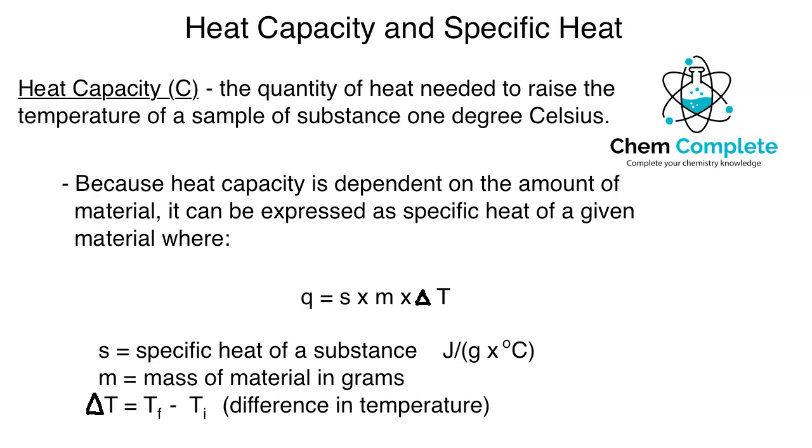Let's get started with heat capacity and specific heat. I want to define heat capacity, and then we can talk about why we go with specific heat. Heat capacity, which is represented with a capital C in chemistry, is the quantity of heat that's going to be needed to raise the temperature of a given sample of substance by one degree Celsius.